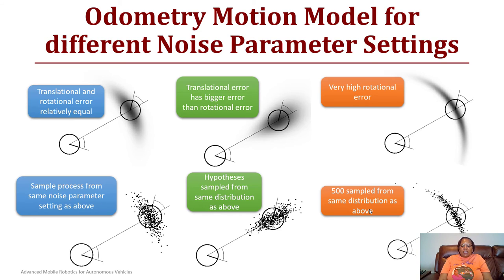In the third one, we have an example of motion where the robot had a high rotational error, based upon that wide spread. Then the sampling of it using 500 values, you see it has a similar widespread as well.